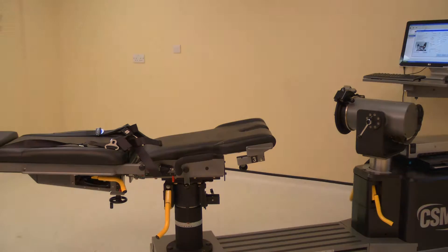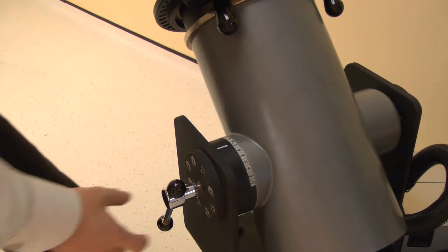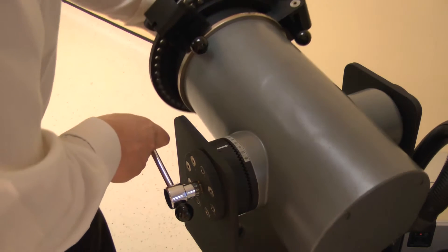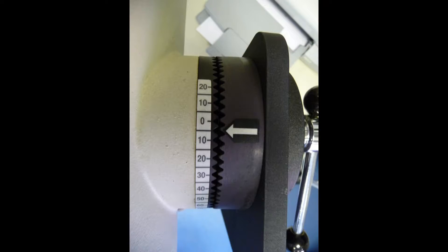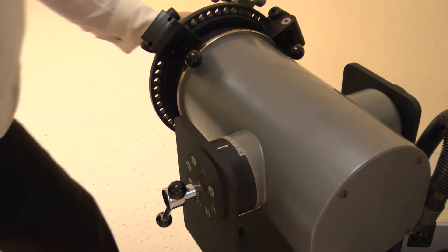Now set the dynamometer tilt. Release the locking handle, then adjust the tilt angle to 5 degrees. Lock by tightening the handle.